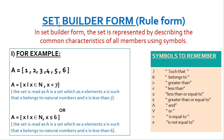Now we will discuss the set builder form, also known as the rule form. In set builder form, the set is represented by describing the common characteristics of all members using symbols. Some important symbols to memorize are: belongs to, greater than, less than, less than or equal to, greater than or equal to, and, or, is equal to, and is not equal to. All these symbols will be required to write our set in set builder form.